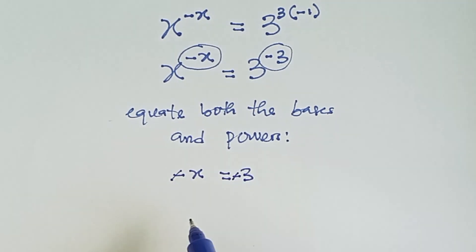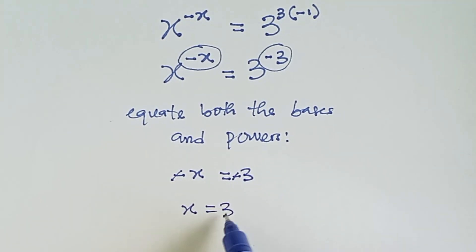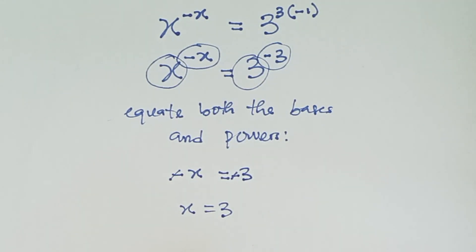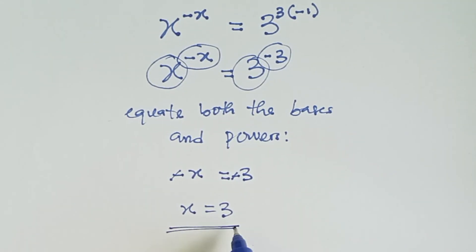And then minus cancels with minus, so x equals 3. And even when we equate the bases, you can see that x equals 3. So that means x equals 3.